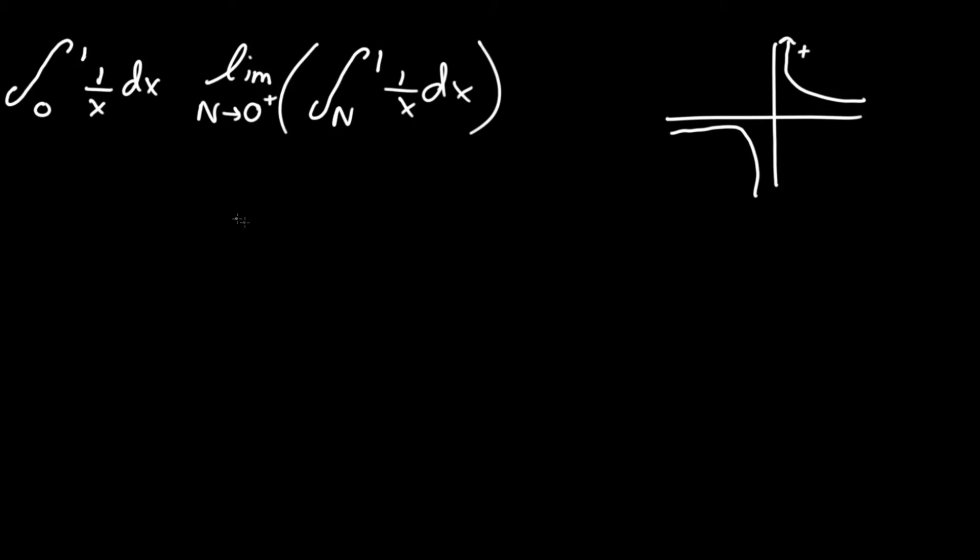So now that we have that settled, we can actually now be allowed to take the integration. So now this equals the limit of n approaching 0 from the plus side of, as we know, the integral of 1 over x is just simply ln absolute value of x, and this will be between n and 1, remember n representing 0 from the plus side.